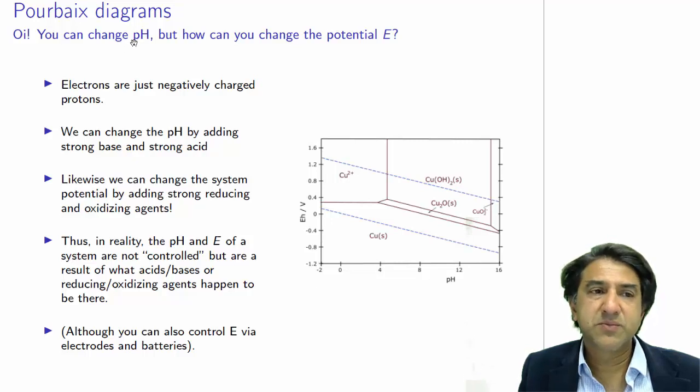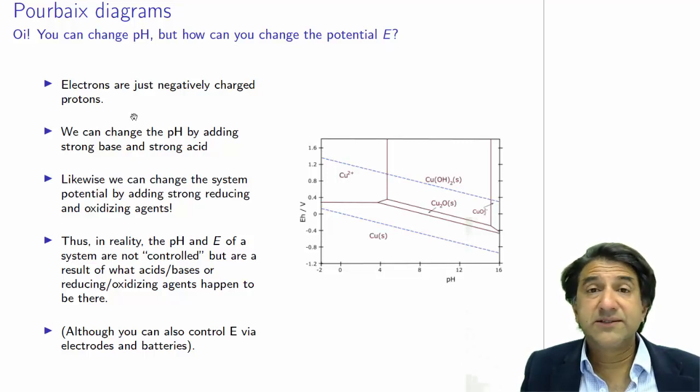You can change pH, but how can you change the potential? Well, you just change the number of electrons in solutions. That's a bit strange, but look...